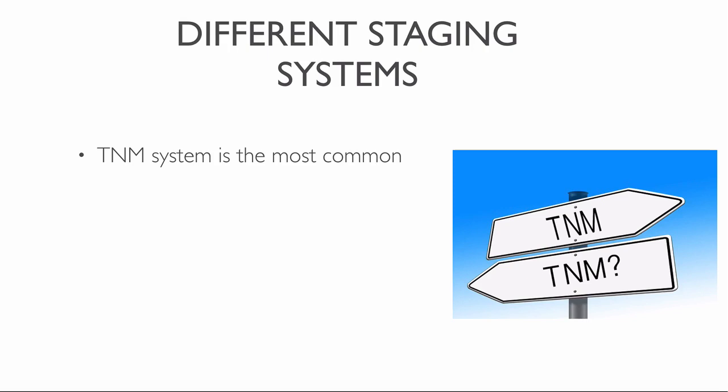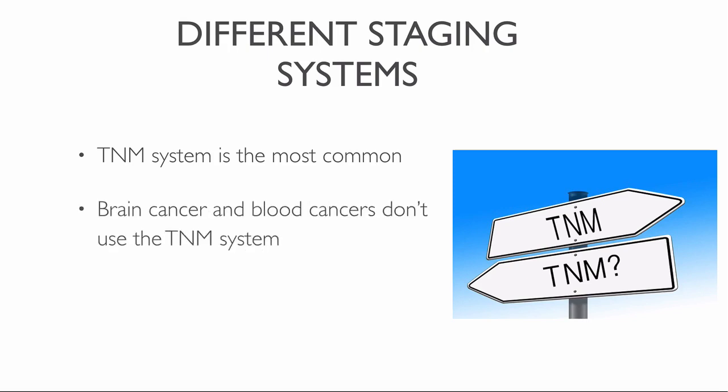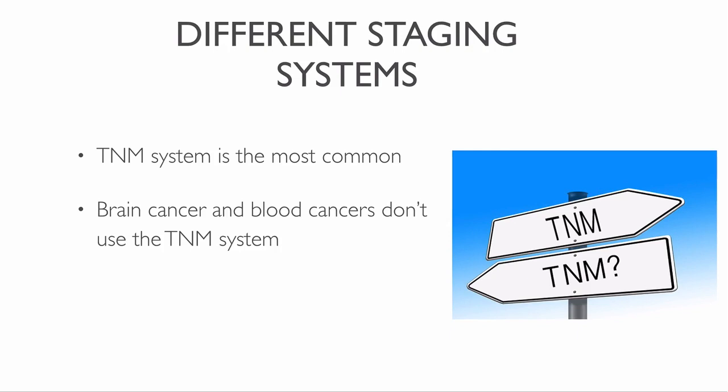However, doctors use other staging systems to classify other types of cancers, such as brain tumors, since they do not often spread outside the brain. Blood cancers such as leukemia, lymphoma, or multiple myeloma do not form solid tumors and therefore don't use the TNM system. Doctors determine most childhood cancers according to other staging systems as well.